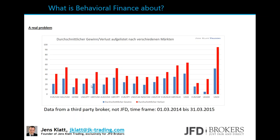I had a similar graphic in my book for a different time frame — Q4 2009 through Q3 2010 — with different assets, but the same tendency: cutting winners short, letting losers run. The ratio was nearly one to two. This is obviously a real problem.